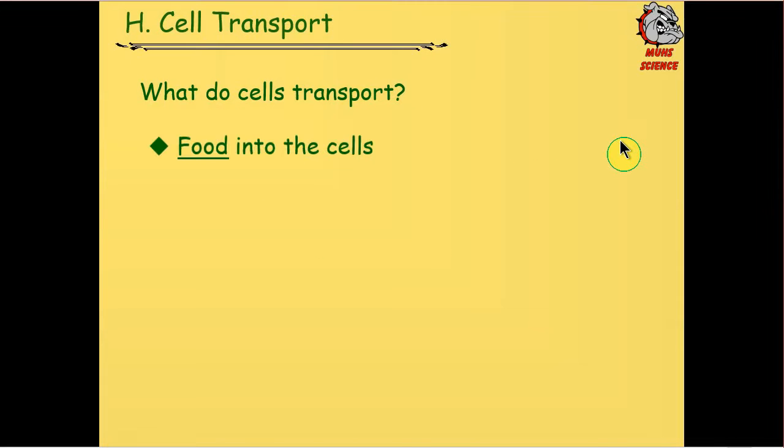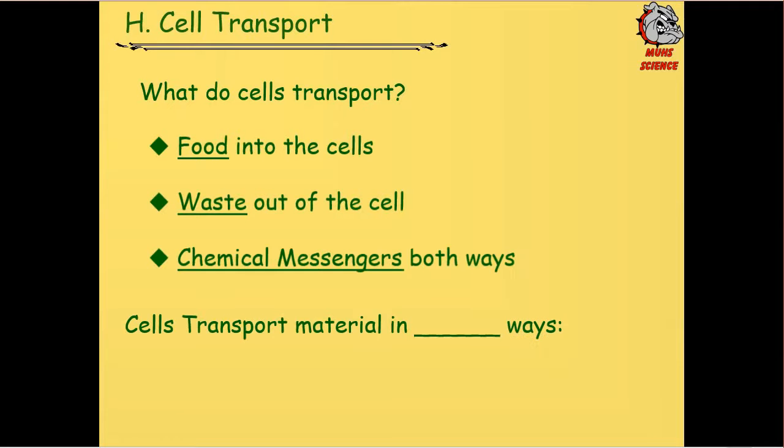Well, cells have to transport several different things. First of all, food has to go into the cells. Waste products that go out of the cells, and chemical messengers that go both ways.